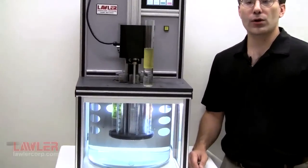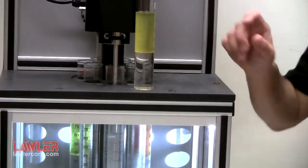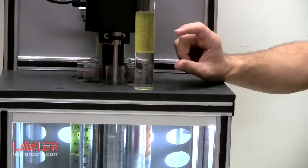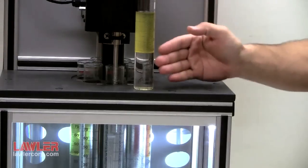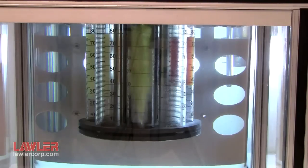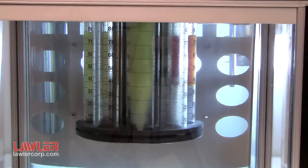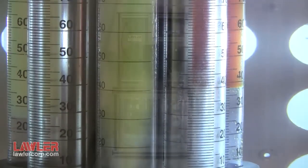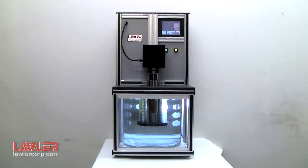ASTM D1401 Water Separability Method takes equal parts of lubricating oil and water in a graduated cylinder, then vigorously stirs them at 1500 RPM. The resulting emulsion must separate back to oil and water quickly for the oil to be considered good. This video reviews how the Lawler Model 305 not only performs the test, but has features to improve precision and prevent future maintenance issues.